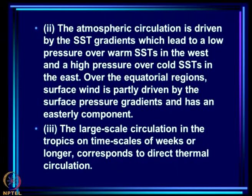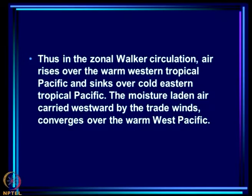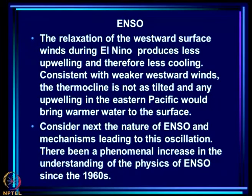The atmospheric circulation is driven by SST gradients, which lead to low pressure over warm SSTs in the west and high pressure over cold SSTs in the east. Over equatorial regions the surface wind is partly driven by surface pressure gradients and has an easterly component. Large-scale circulation in the tropics on time scales of weeks or longer corresponds to direct thermal circulation. In the zonal Walker circulation, air rises over the warm western tropical Pacific and sinks over the cold eastern tropical Pacific. The moisture-laden air carried westward by the trade winds converges over the warm west Pacific.